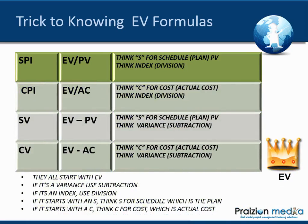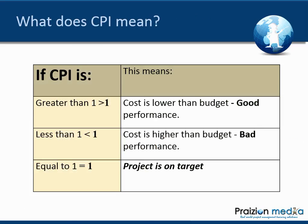So the pattern is: all formulas start with EV. Variances subtract, indices divide. S for schedule uses planned value; C for cost uses actual cost. Once you get that rhythm down, it becomes easy to remember these formulas.